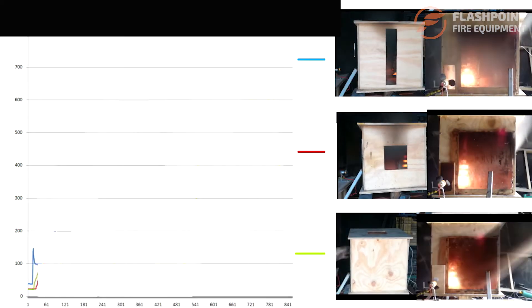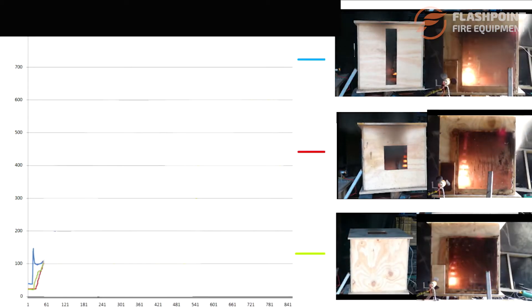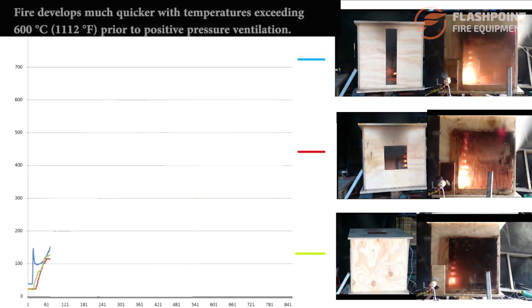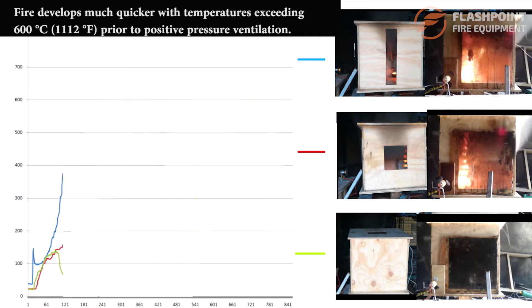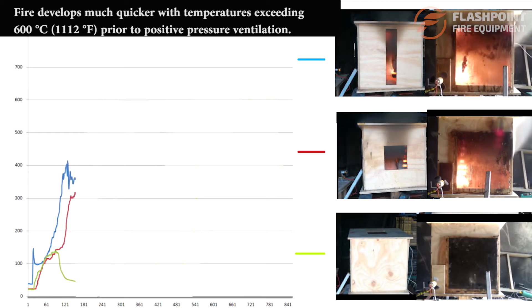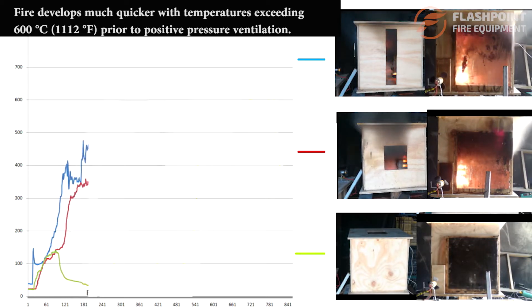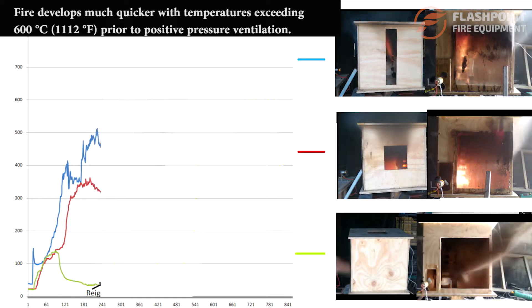In this second set of box configurations, the fire develops much quicker, with temperatures exceeding 600 degrees Celsius — 1112 degrees Fahrenheit — prior to positive pressure ventilation being activated.